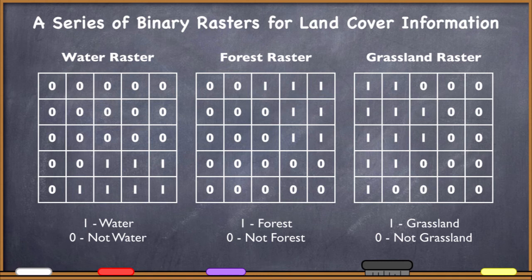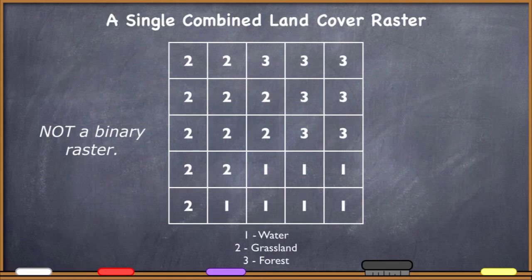I don't have to represent the data in this way, though. What if I wanted to move to a non-binary way of representing it? So here is a single combined land cover raster. This is no problem. Rasters in general can store more values than just zero or one if I want to move away from a binary format. So this is not a binary raster. And in this case, I'm saying one means water, two means grassland, and three means forest.